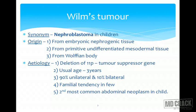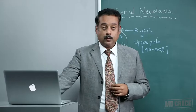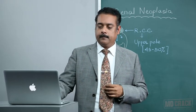The usual age of presentation is 3 years. 90% of these tumors are solitary and unilateral, but in 10% there can be bilateral presentation. This tumor can show familial tendency in a few cases, and it is the second most common abdominal neoplasm in children.